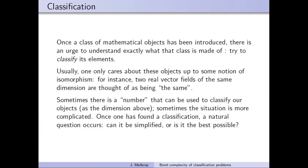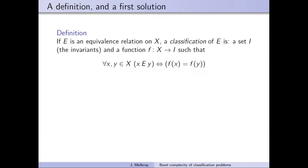For instance, maybe the first time in undergraduate math where you meet this is when you classify vector spaces of finite dimension over some fixed field — up to isomorphism, they are the same if and only if the dimensions are equal. Then they can get more complicated; for instance, for vector spaces, you could have infinite dimensions, different cardinalities. And sometimes it's much more complicated to classify objects up to isomorphism. There is also a second thing: you have a classification and you would like to know whether you can find something simpler or if it is in some sense the best possible.